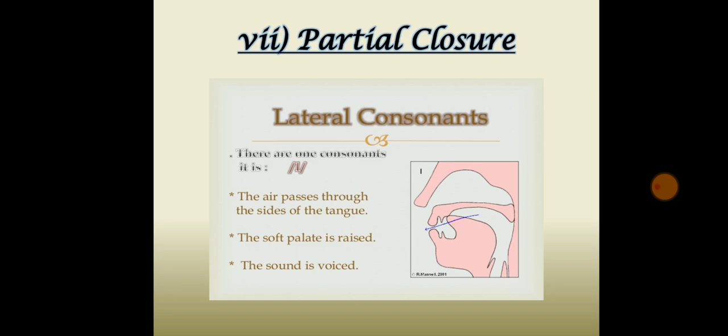Partial closure: the active and passive articulators are in firm contact with each other, and the soft palate is raised, so the lung air cannot pass through the nose. If the sides of the tongue are lowered so that there is a gap between them, the air will escape along the sides of the tongue without any friction. Sounds produced with this stricture of partial closure are called laterals. For example, the sound L in 'love'.